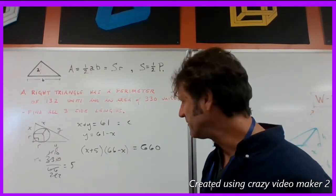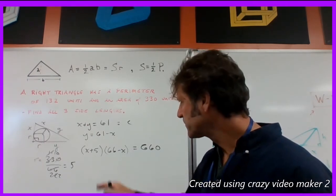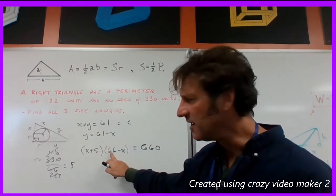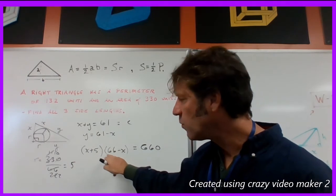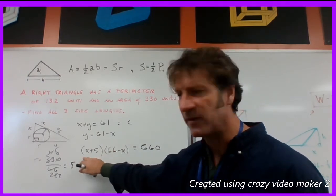And you can go ahead and foil this whole thing yourself if you like. I'm going to write it out here what the result is. Okay. We're going to get a negative x squared. We're going to have a total of 61 of these because we're going to have negative x times 5 and 66 times positive x.